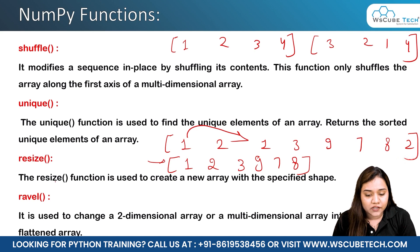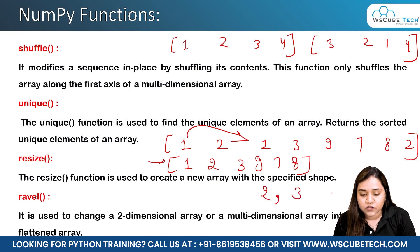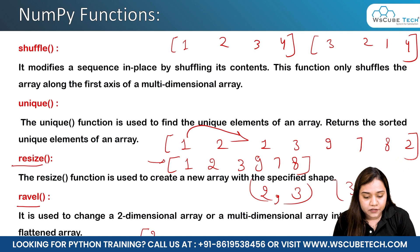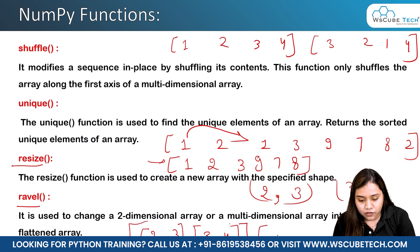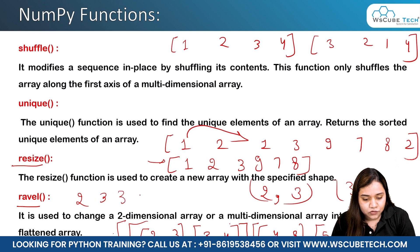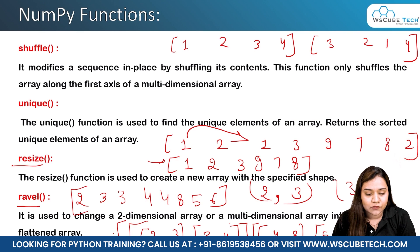Next is resize. The resize function is used to recreate a new array with a specified shape. Suppose you want two rows and three columns or three rows and two columns — resize function is used for that. Lastly we have ravel. Ravel changes a multi-dimensional array into a flattened one. For example, a three-dimensional array with elements like two, three, four, eight, five, six — ravel will flatten it into one-dimensional output with all eight elements.